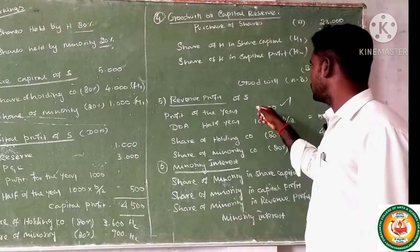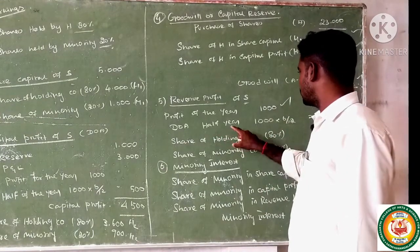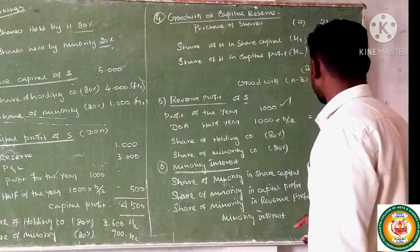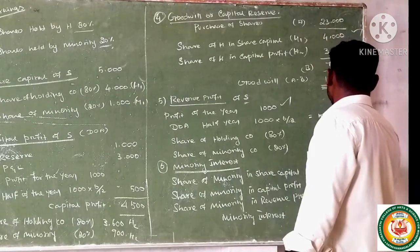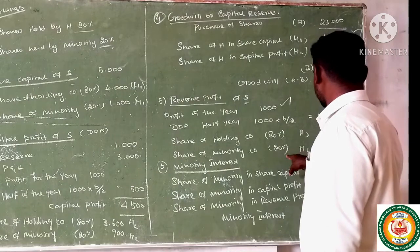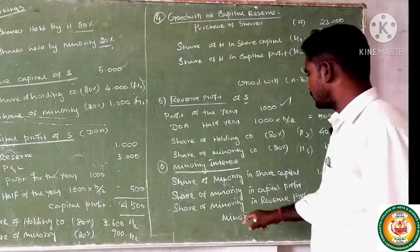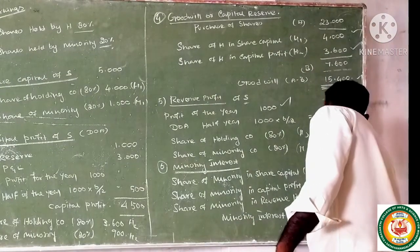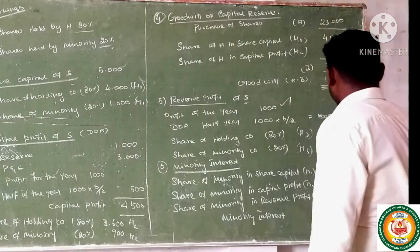Revenue profit: profit for the year after the date of acquisition — half year is 1,000 × 6/12 = 500. Holding company's 80% share: 400. Minority interest M1 (share capital), M2 (capital profit), M3 (revenue profit) — total minority interest: 2,000.